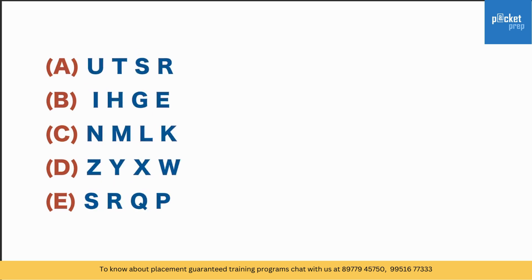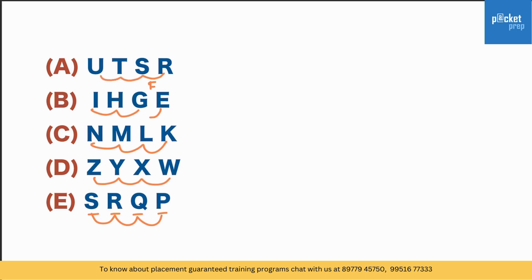Sometimes you also see alphabets. Look at the pattern in these alphabets. Starting from the bottom: S, R, Q, P — read as P, Q, R, S — they are in sequence. Then W, X, Y, Z; then K, L, M, N; then E, F, G, H, I; and R, S, T, U. In all cases the letters are in sequence, except in one group where the letter F is missing. Therefore that group is the odd one out.